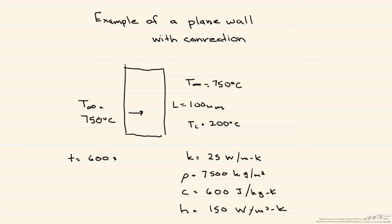And so we're going to use the following properties. The thermal conductivity of the wall is 25 watts per meter Kelvin. The density is equal to 7500 kilograms per meter cubed. The heat capacity is 600 joules per kilogram Kelvin. And finally, the convective heat transfer coefficient, and if you remember I said it's the same on both sides of the wall, is equal to 150 watts per meter squared Kelvin.